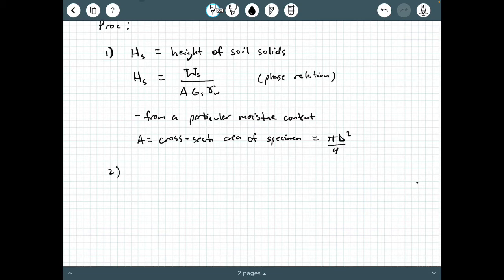Step two is computing the void height, H sub V. This is the total height of the voids within your specimen. We calculate H sub V as the initial height minus the height of the soil solids that we just computed. H naught is the initial specimen height.